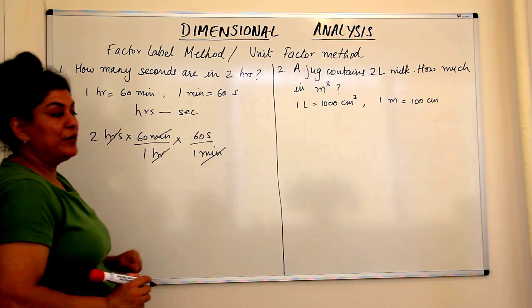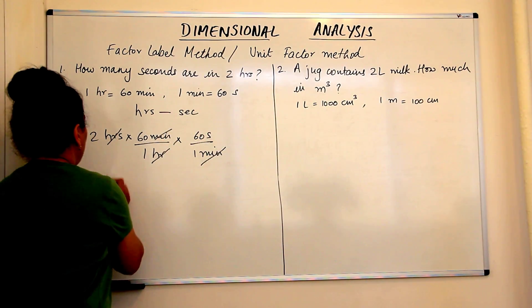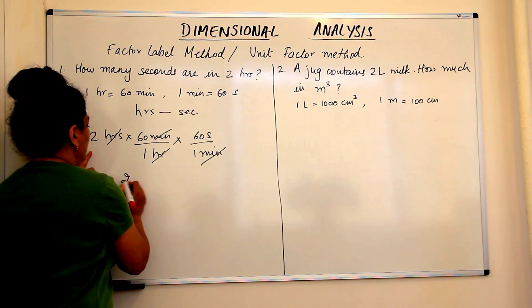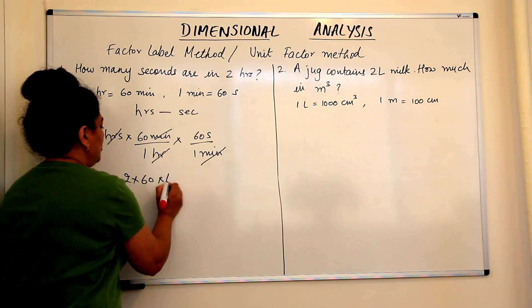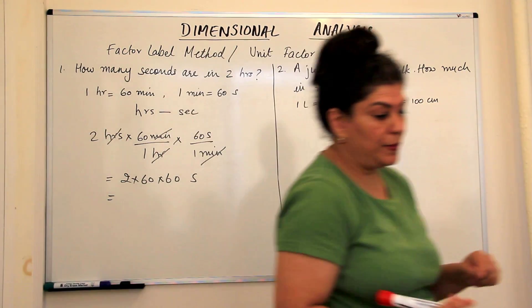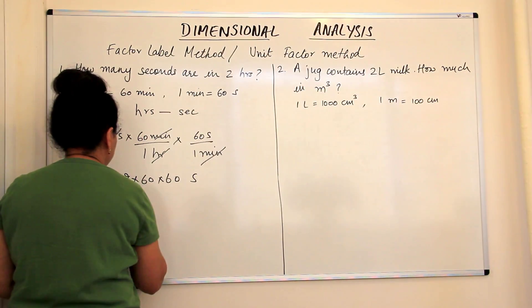So we are left with seconds, so our answer would be how much are two hours in seconds? The answer is 2 into 60 into 60 seconds which is equal to 7200 seconds.